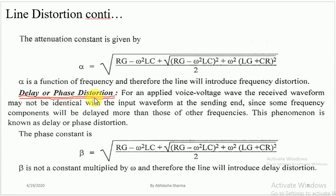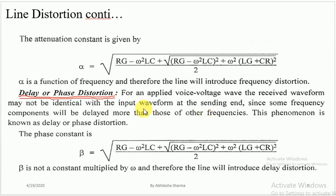The next type of distortion is called delay or phase distortion. For an applied voice voltage, the received waveform may not be identical with the input waveform at the sending end, since some frequency components will be delayed more than those of other frequencies. The reason for this type of distortion is that some frequency components are delayed more than others.